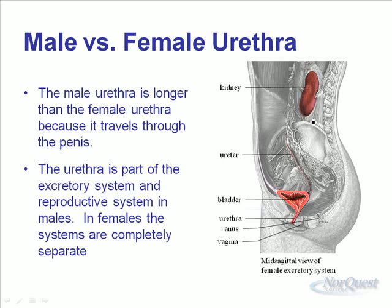Here we can see the kidney, and one of the ureters as it comes down to the bladder. The bladder stores the waste. Here's the female urethra — its exit is actually just above the vagina. So here's the reproductive system: you have the vagina, the cervix, the uterus, fallopian tubes, and all that. But they are separate systems. Whereas in the male system, the urethra carries both semen from the reproductive system and urine from the excretory system.